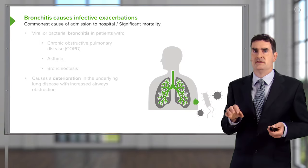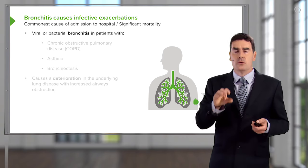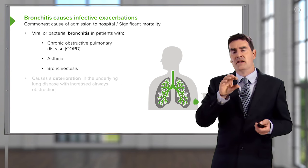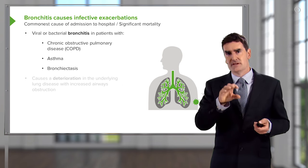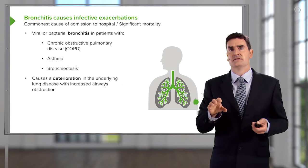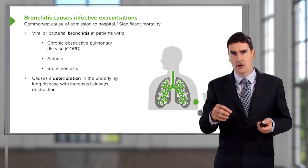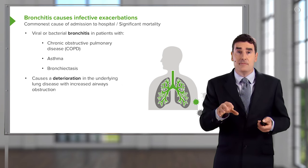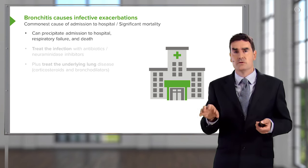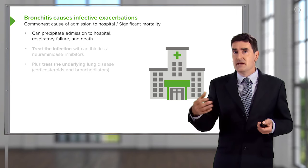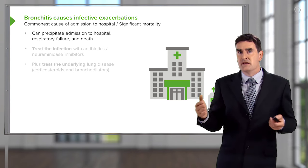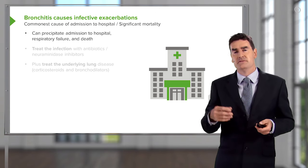An important consideration is that bacterial tracheobronchitis is a very common cause of an exacerbation of chronic lung disease. This type of infection will worsen the underlying condition in patients with COPD, asthma, or bronchiectasis, causing increased airways obstruction that can precipitate hospital admission with increased breathlessness and potentially respiratory failure. There is a 9% mortality associated with these infective admissions to hospital.